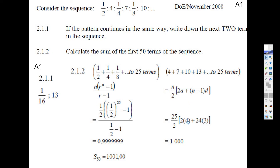A is equal to 4 because it's the first term. N minus 1 is 25 minus 1 is 24. D is 3 because it's going up by 3. That's 8 plus 3 times 24. And then you divide it by 2, multiply it by 25. Hey, it's 1,000.